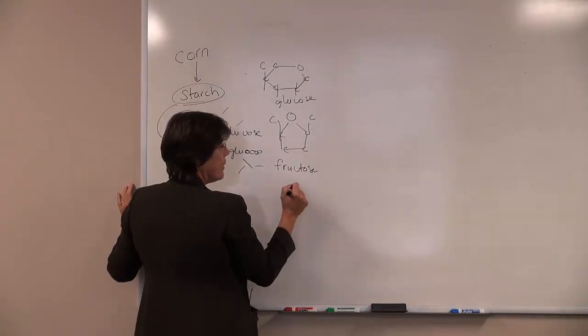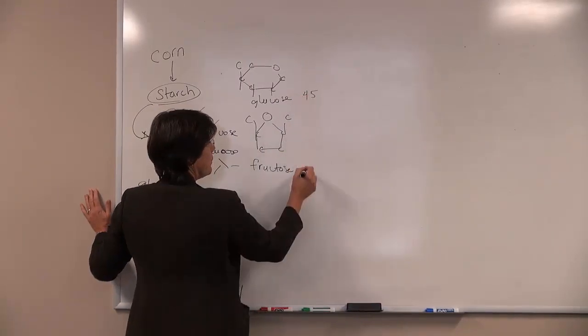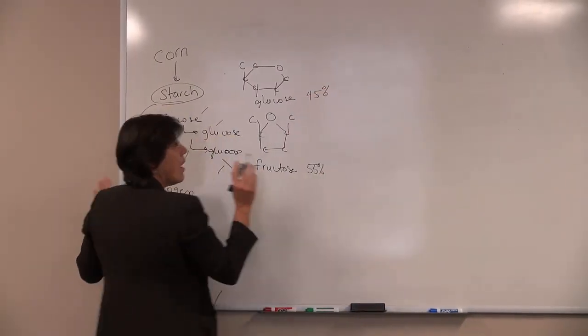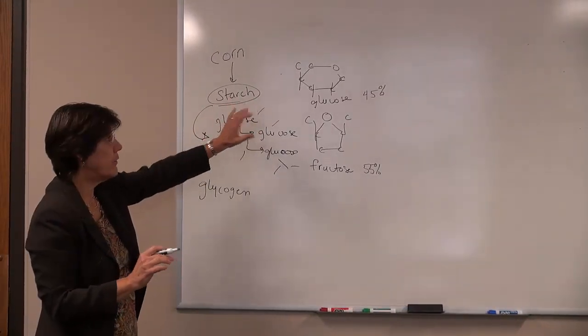So the amount of the glucose and fructose is about in the ratio of 45 to 55 percent of the molecules in high fructose corn syrup. 45 percent glucose, 55 percent fructose.